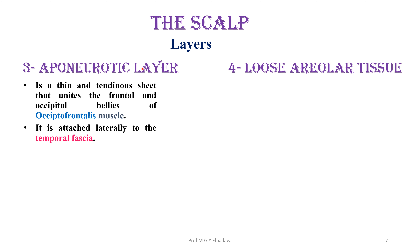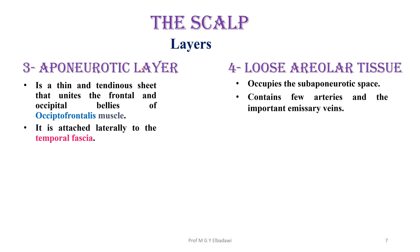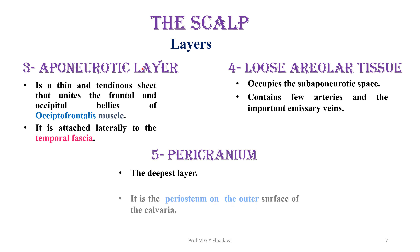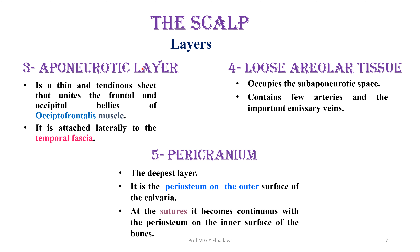The fourth layer is the loose areolar tissue, which occupies the sub-aponeurotic space and contains few arteries and very important emissary veins. The last layer is the pericranium, which is the deepest layer. It represents the periosteum of the outer surface of the calvaria, as the sutures become continuous with the periosteum on the inner surface of these bones.